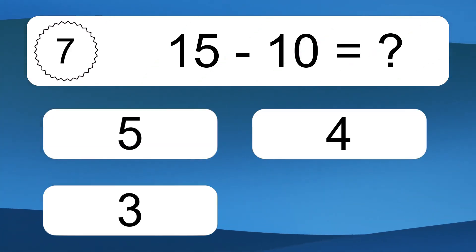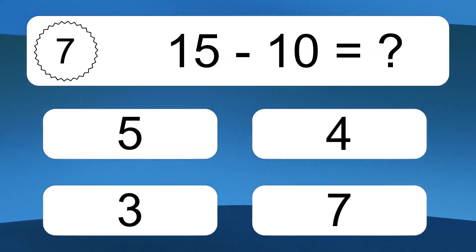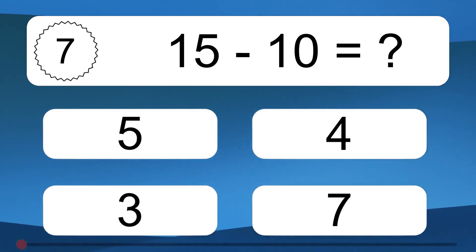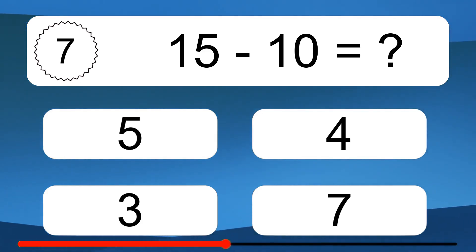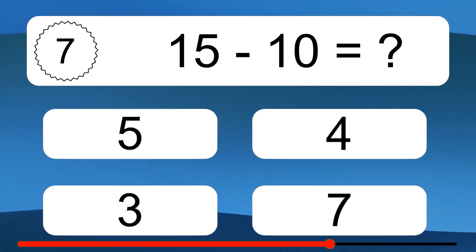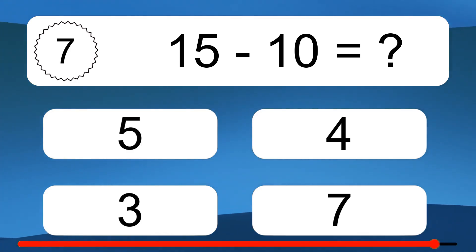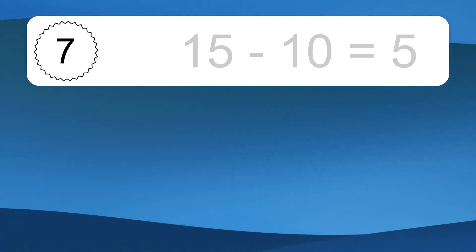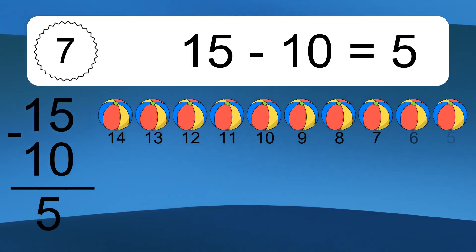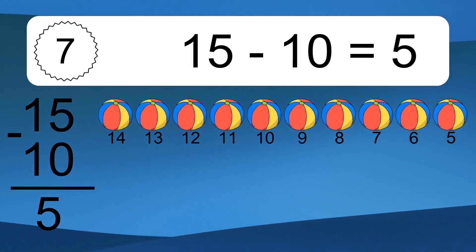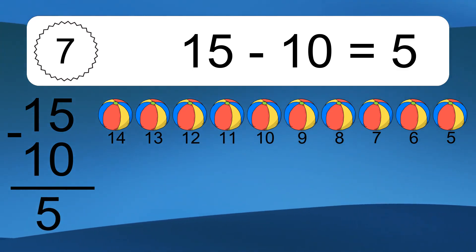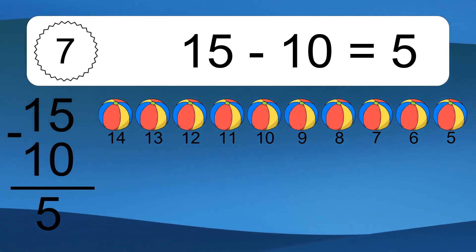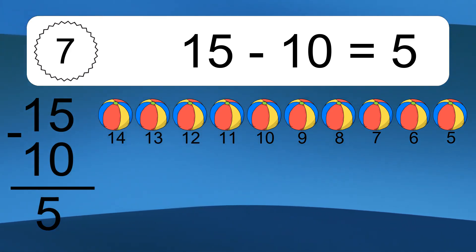15 minus 10 equals what? 15 minus 10 equals 5. Let's count it: 14, 13, 12, 11, 10, 9, 8, 7, 6, 5.